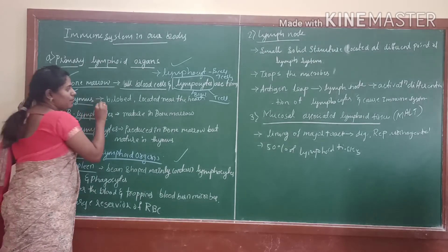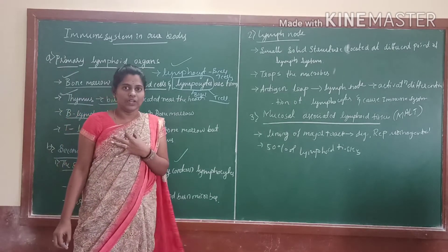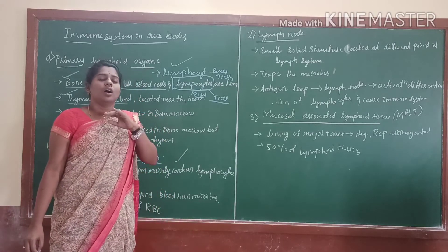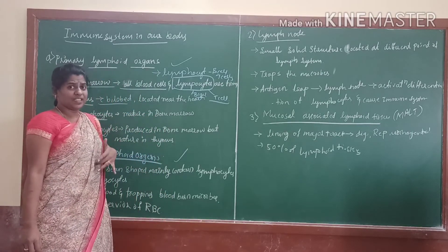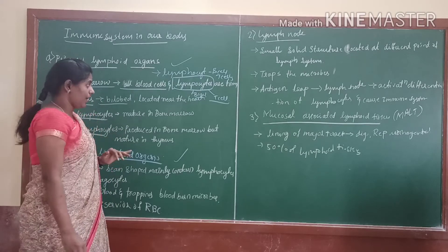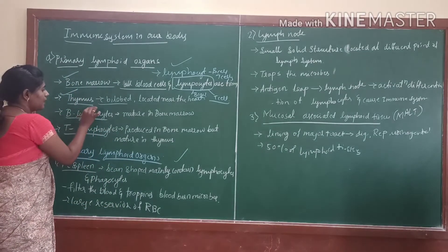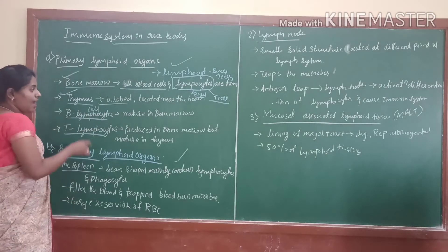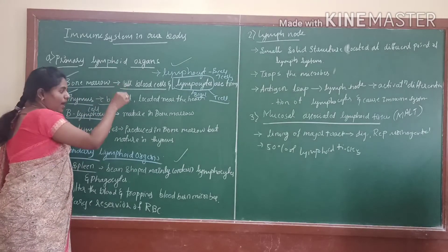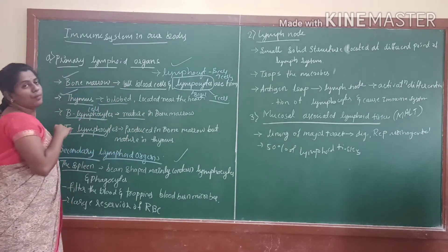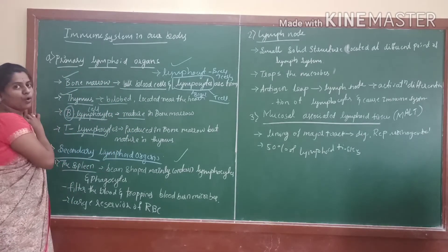The thymus is located near to the heart, beneath the breast bone. B lymphocytes are nothing but B cells. The B cells are produced in bone marrow and also mature in bone marrow. That's why it is called B — B for bone marrow.